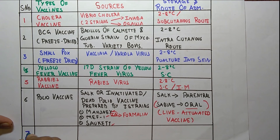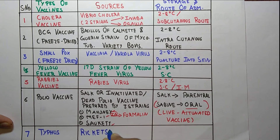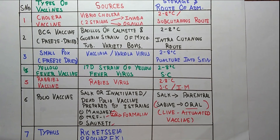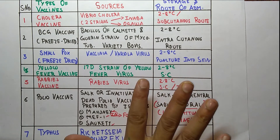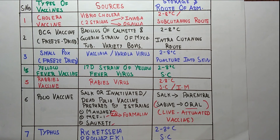The seventh vaccine is the typhus vaccine. The source of the typhus vaccine is Rickettsia prowazekii. The storage temperature is 2 to 8 degrees Celsius, and the route of administration is subcutaneous. Please try to note this down, as questions from this topic are asked in every exam. Please subscribe and hit the bell icon for more updates. Thanks for watching.